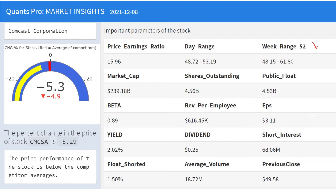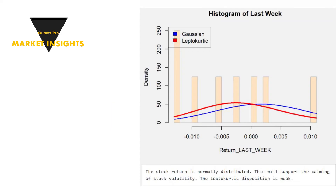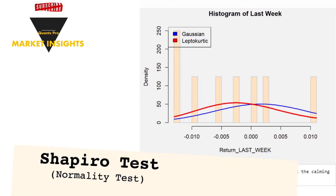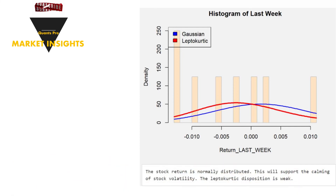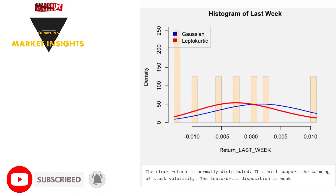After talking about some descriptors, let's look at the return performance of the company. Non-linear behavior is dominant in the stock markets. Examining whether the stock return is normally distributed or not also tests the existence of the Leptokurtic theory, which includes excessive oscillations. Therefore, the Shapiro test will be applied to test the normality of the stock. The Gaussian and Leptokurtic features of the return distribution will be compared. The stock has performed as shown in the chart over the past week, and the returns behave more closely to the Gaussian curve.